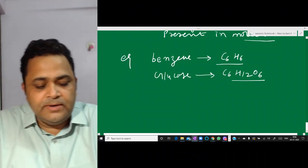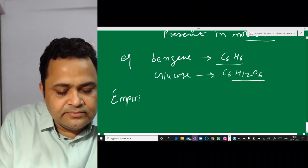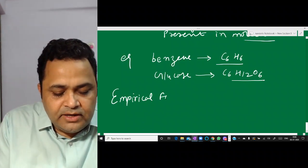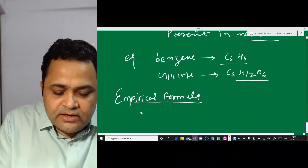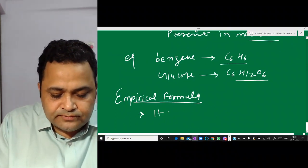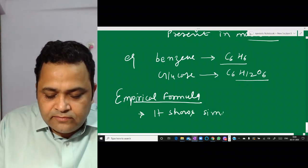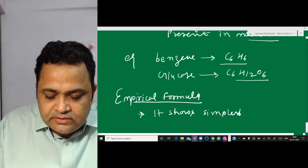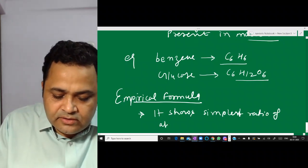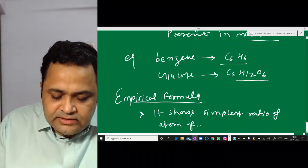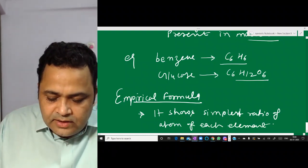Now let us first define what is empirical formula. Empirical formula shows the simplest ratio of atoms of each element in a molecule.